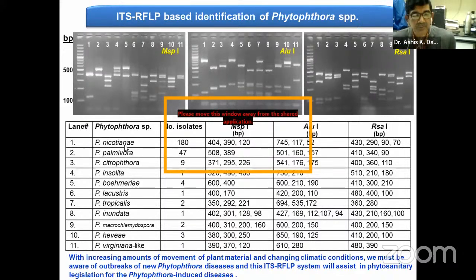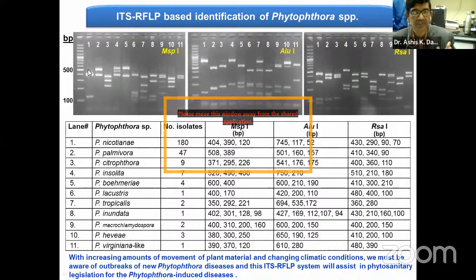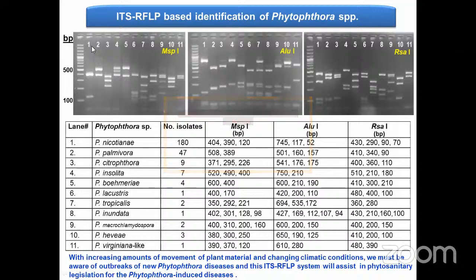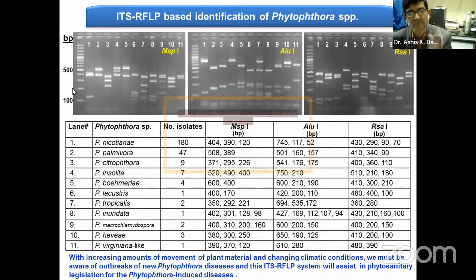Here you can see 11 different Phytophthora species we have identified through this technique. Each species shows a characteristic profile — for example, Phytophthora nicotianae, Phytophthora palmivora, and Phytophthora citrophthora each show three different fingerprints. So by doing this technique you can clearly distinguish them. These are different Phytophthora species, not the same isolates.